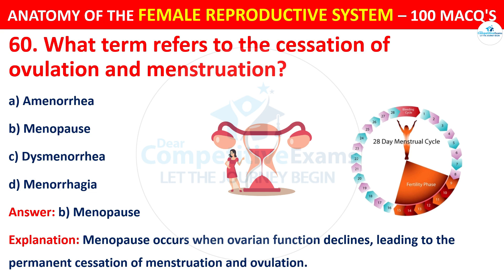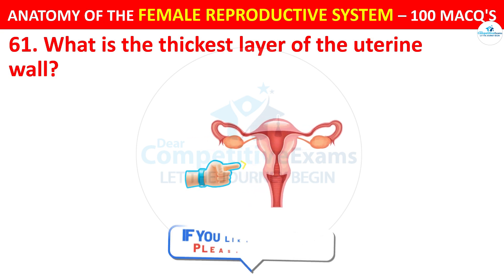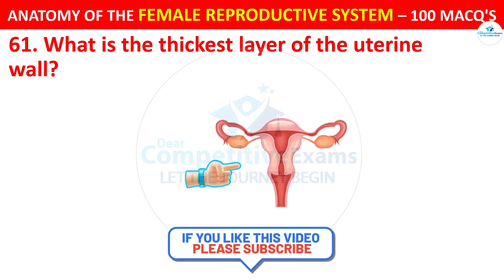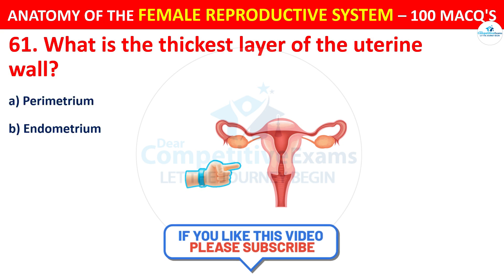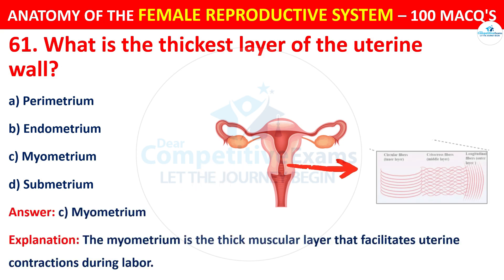Question number 61. What is the thickest layer of the uterine wall? Options: perimetrium, endometrium, myometrium, or submetrium. The correct answer is C — the myometrium. The myometrium is the thick muscular layer that facilitates uterine contraction during labor.